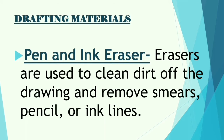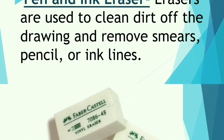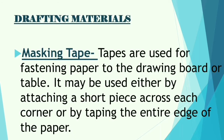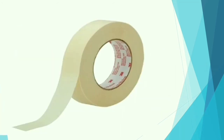Pen and ink eraser — erasers are used to clean dirt from the drawing and remove smears, pencil, or ink lines. It can be used for ink or for pencil. Next are masking tapes — used for fastening paper to the drawing board or table. It may be used by attaching a short piece across each corner, or by taping the entire edge of the paper. Masking tape is preferred because it is easy to remove from bond paper without damaging it.